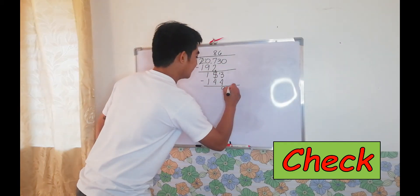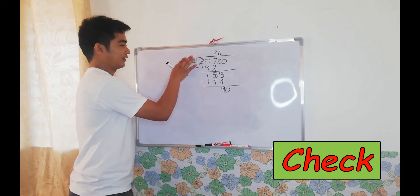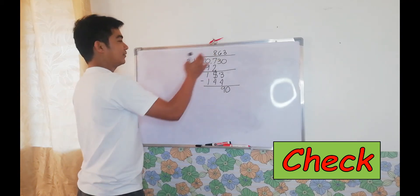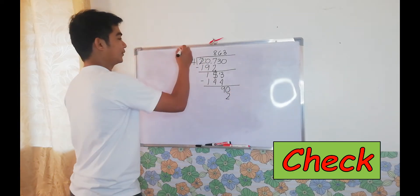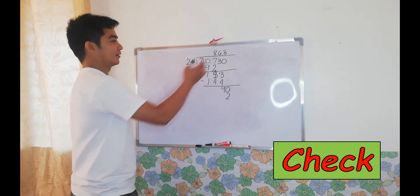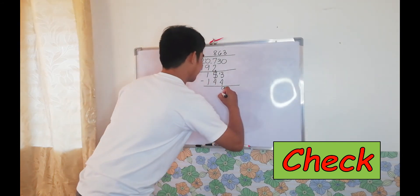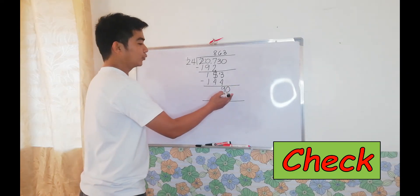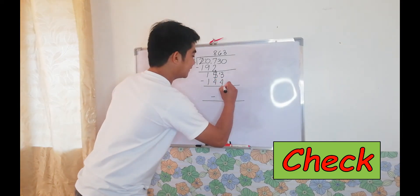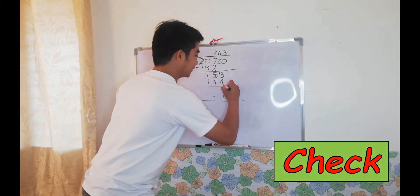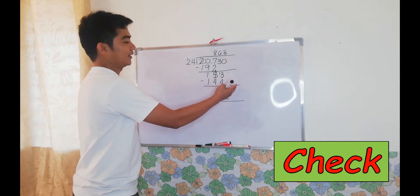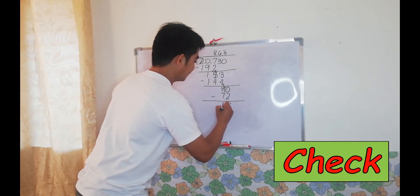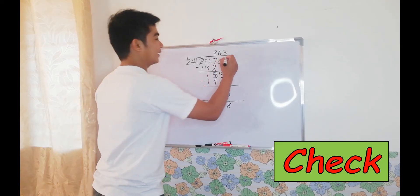Bring down 0. How many 24s are in 90? We have 3. 3 times 4 equals 12 — write 2 ones and regroup 1 ten. 3 times 2 equals 6, plus 1 equals 7. Proceed to subtraction: 0 minus 2 — we cannot subtract 2 from 0, so regroup 1 ten from the 9, making it 8. 10 minus 2 equals 8. 8 minus 7 equals 1. Since we still have a remainder, we simply add 0.